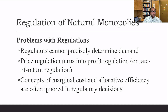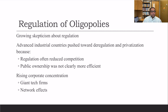Regarding regulation of natural monopolies and its problems: regulation cannot precisely determine demand, and price regulation turns into profit regulation or rate-of-return regulation. The concepts of marginal cost and allocative efficiency are often ignored in regulatory decisions. Growing skepticism about regulation has pushed advanced industrial countries toward deregulation and privatization, because regulation often reduced competition and public ownership was not clearly more efficient.